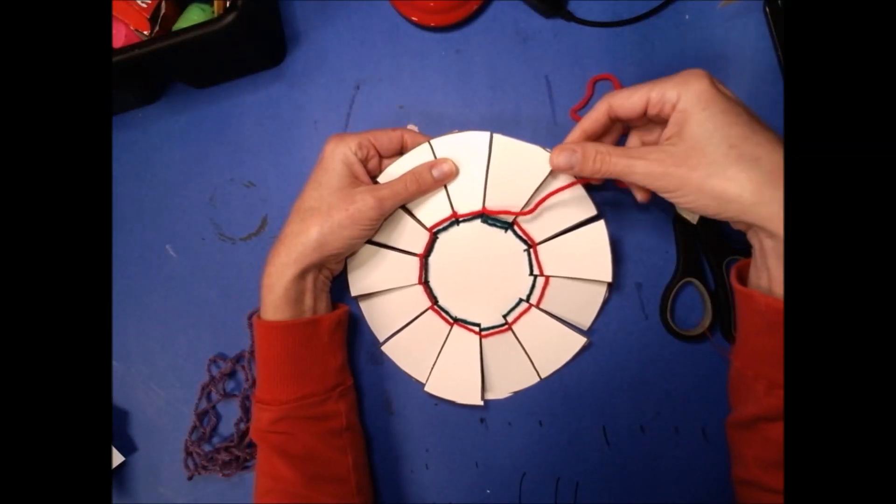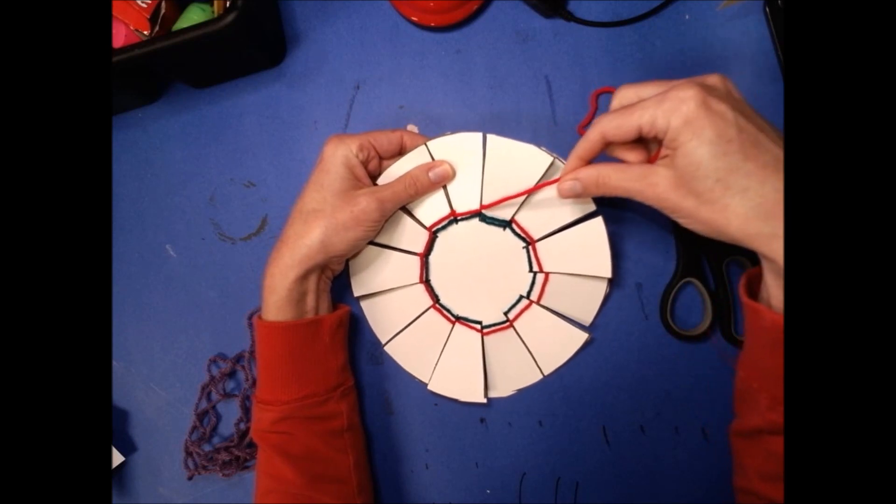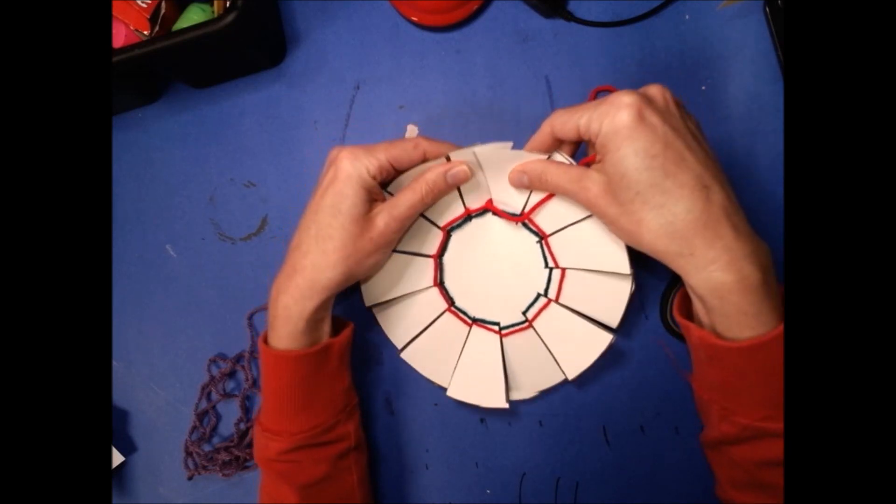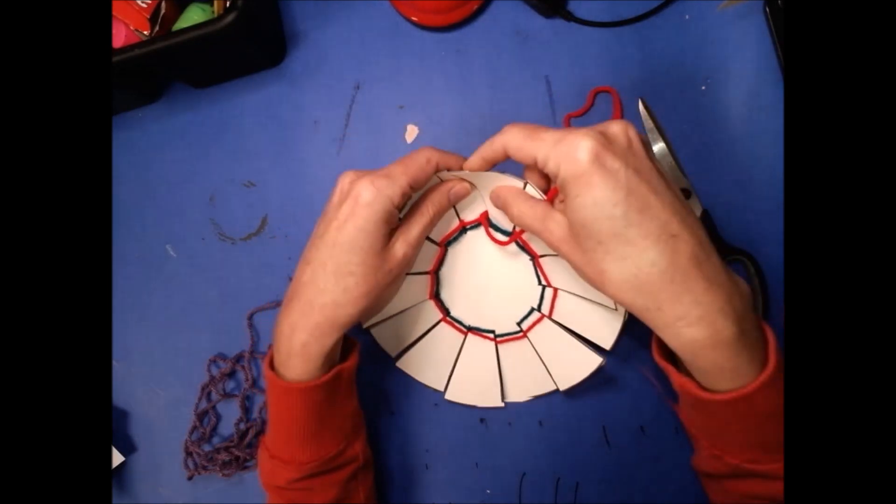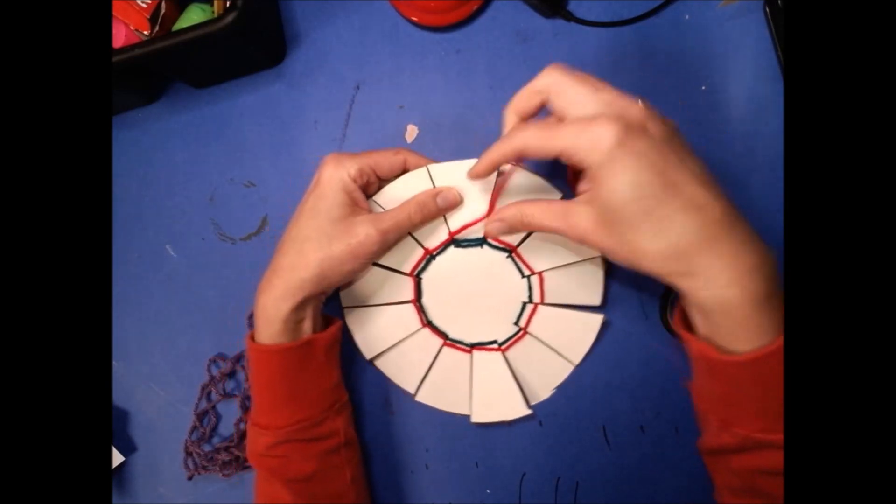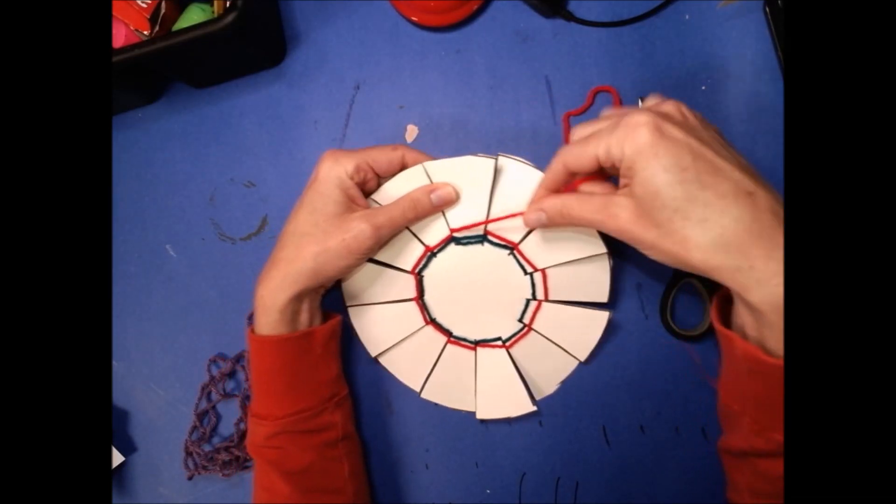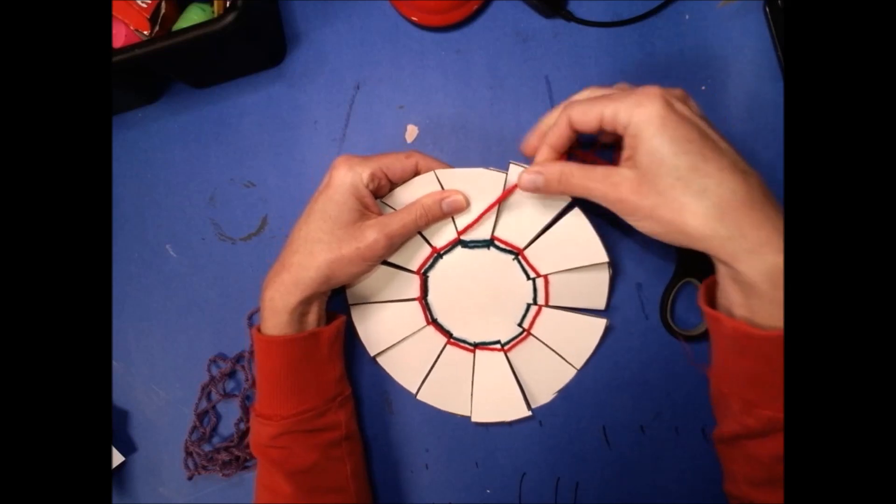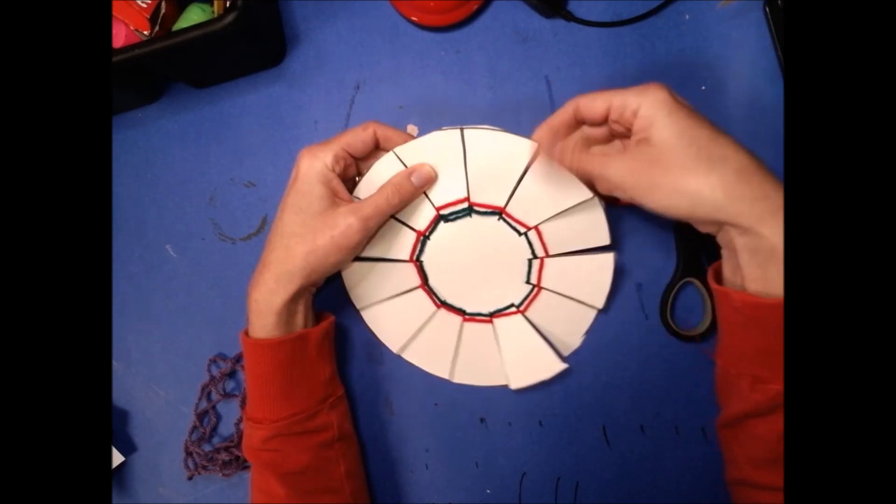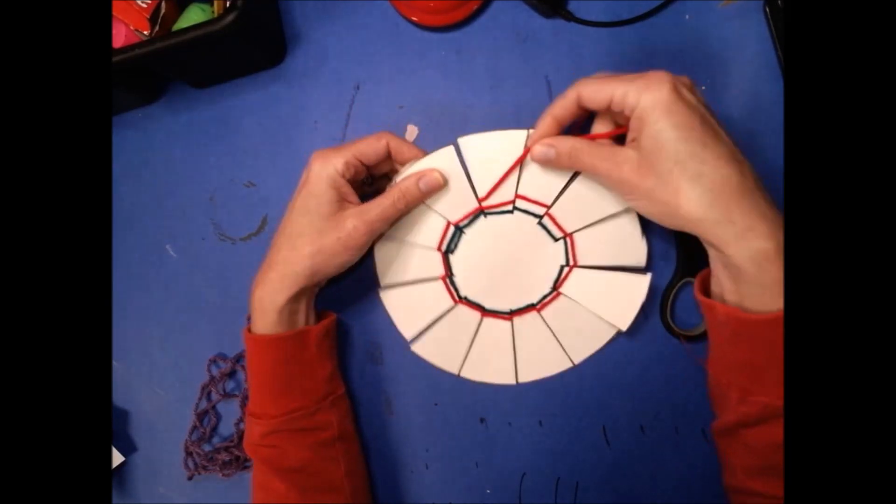Now while I'm weaving, I don't want to tug the yarn too tight because that might squish my paper's flaps together. So I'm gonna hold my yarn close to my plate, but I'm not pulling it super tight. I'm just gently sliding it between my flaps.